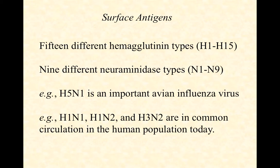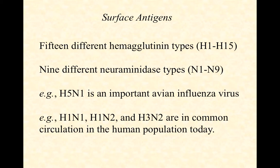We can generally label a particular influenza strain by its hemagglutinin type and neuraminidase type. You've heard of H5N1 — that's an important bird flu virus. In human populations, we often see H1N1, H1N2, and H3N2. Within a given category like H1N1, there's still variation — some strains are more virulent than others — but they share certain properties. There are many different versions of influenza viruses, and they change and drift and shift, as we'll talk about shortly.